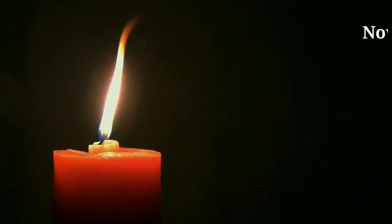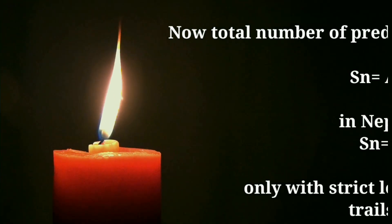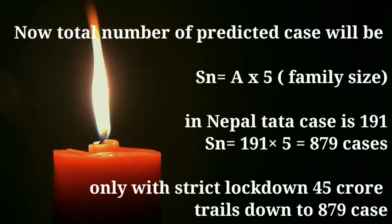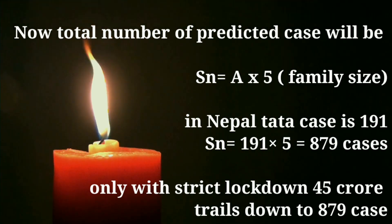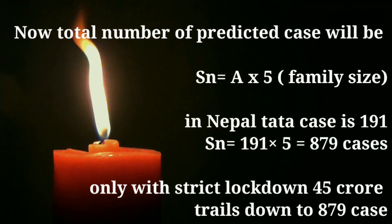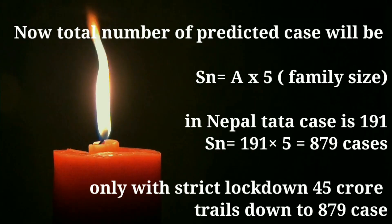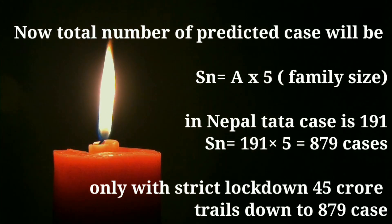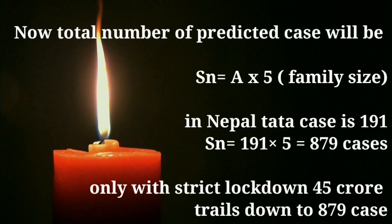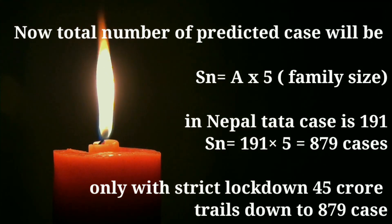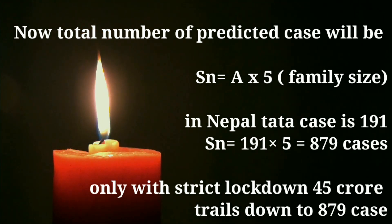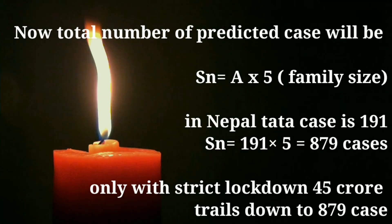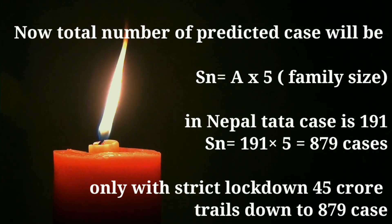These countries have around four to five members in a family. If we take this data into account — here we have taken five members in a family — the total number of cases in Nepal in the next 14 days, if lockdown is precisely or strictly followed, will be 879 cases.